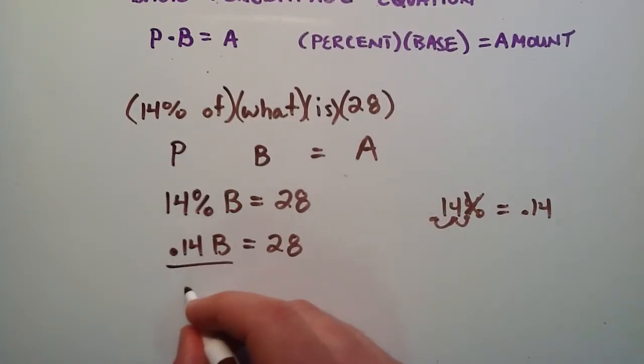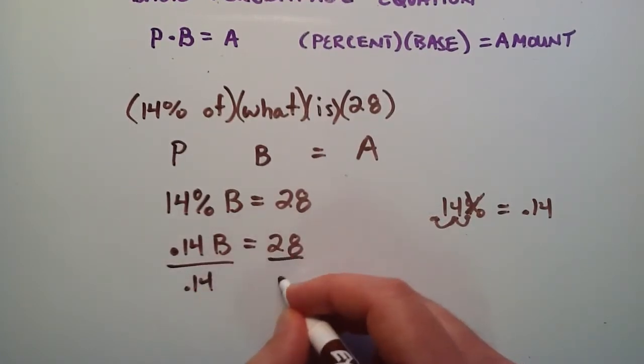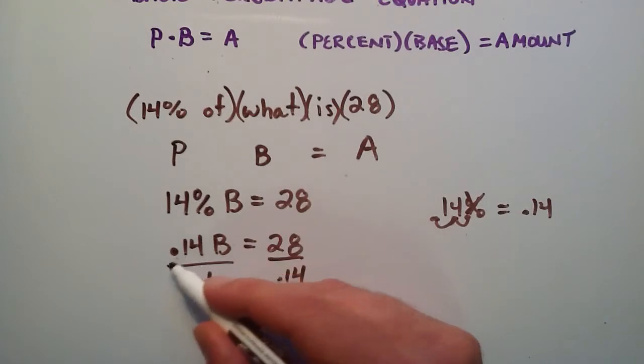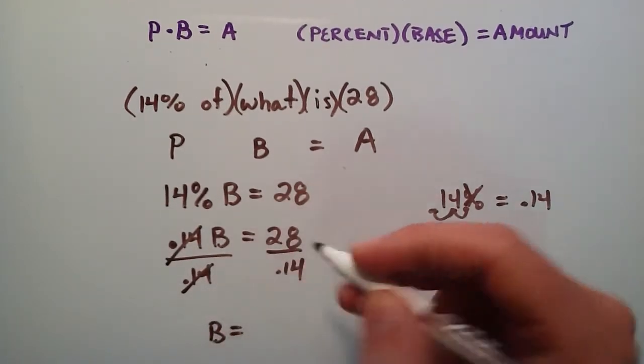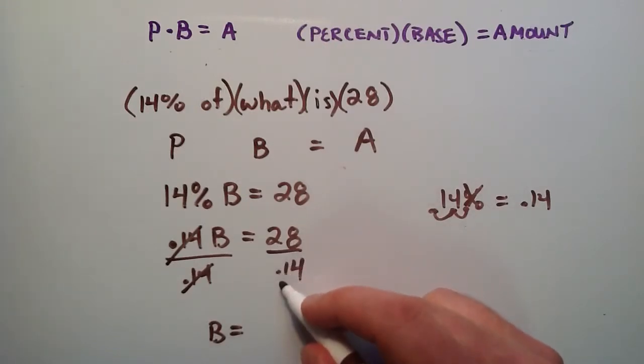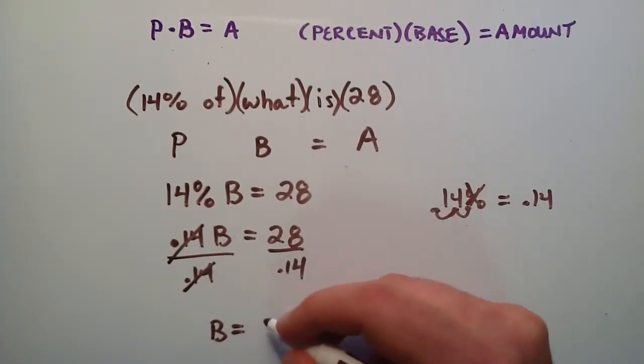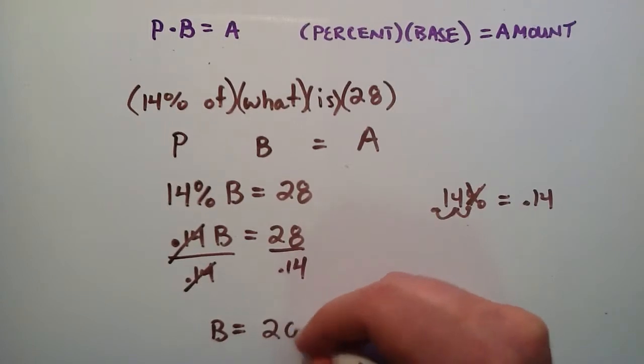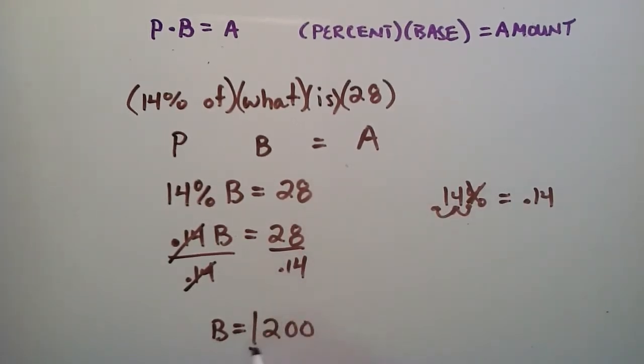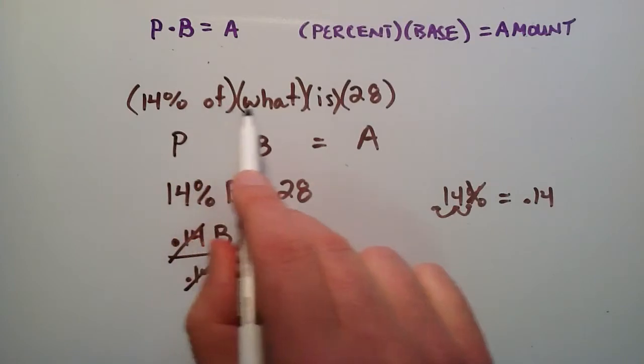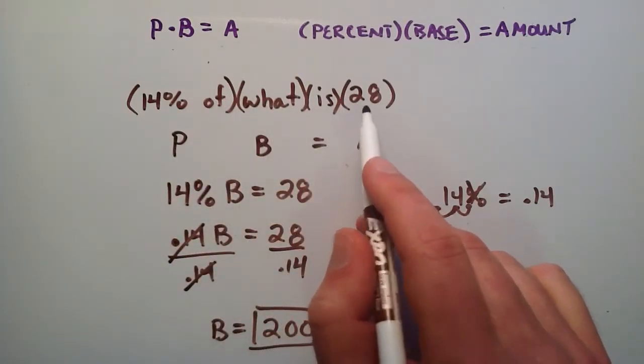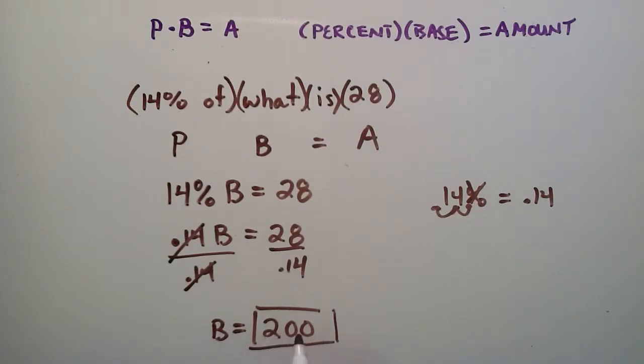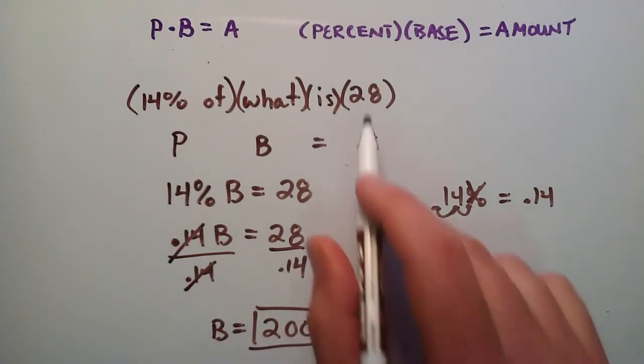Divide each side by 0.14. 0.14 cancels with 0.14, giving us our base equals 28 divided by 0.14. Just plug that into your calculator, and you will find the answer equals 200. So 14% of 200 equals 28. If you were to take the number 200, multiply it by 0.14, you would find the answer equals 28.